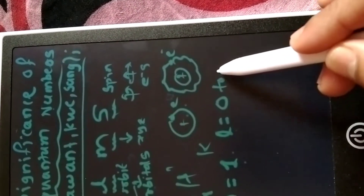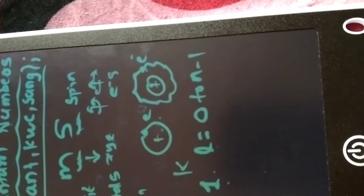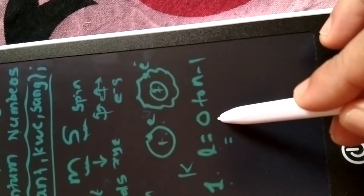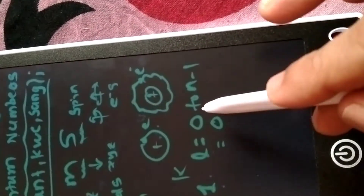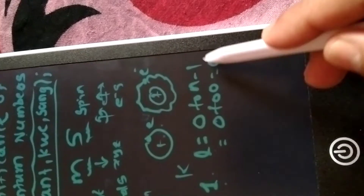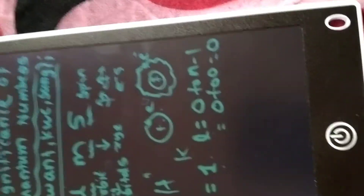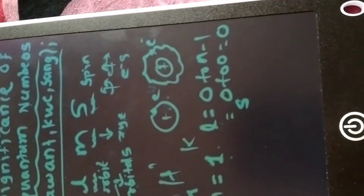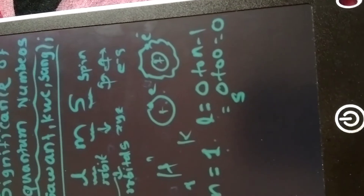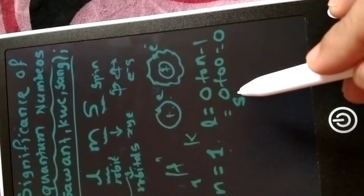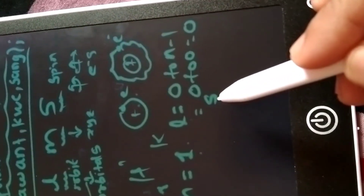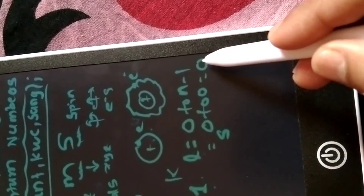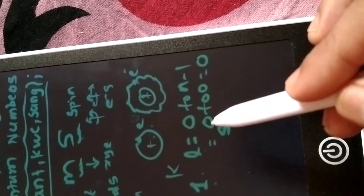For n=1, there is only one energy level. The orbital quantum number l ranges from 0 to n minus 1, which gives a value of zero. So l = 0, meaning the first orbital is the s orbital — the sharp, spherical orbital. It has only one orientation, so only zero is observed. The s orbital has no x, y, z types — only the s orbital is present for hydrogen.